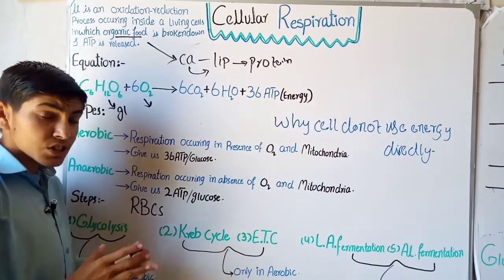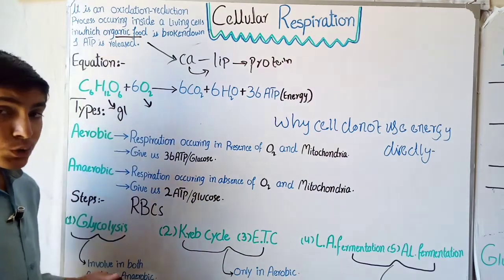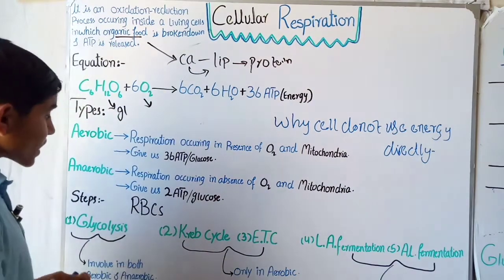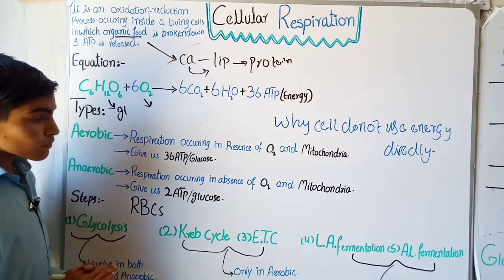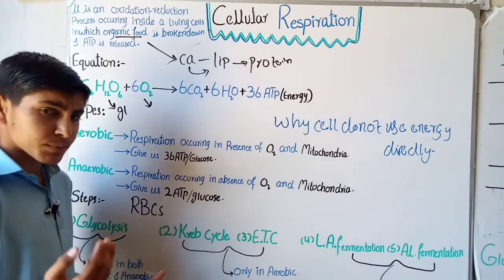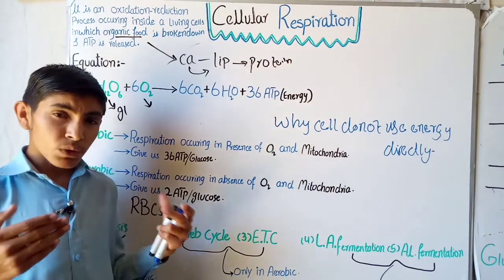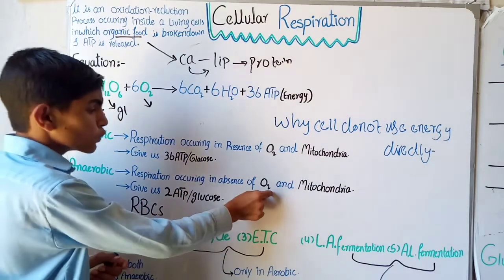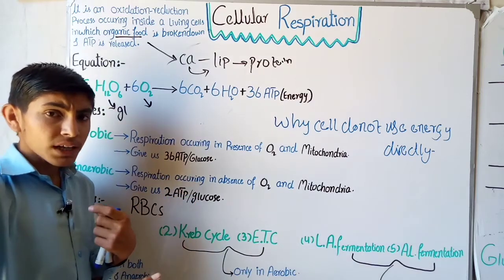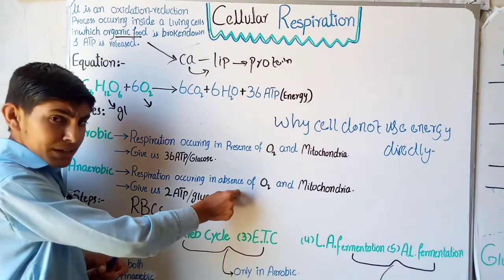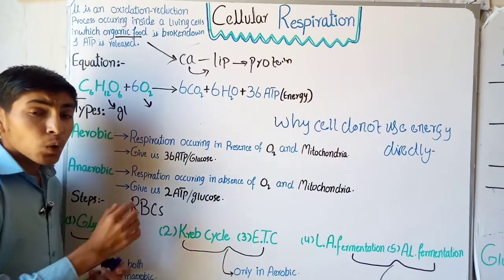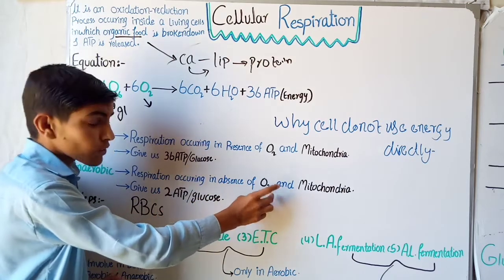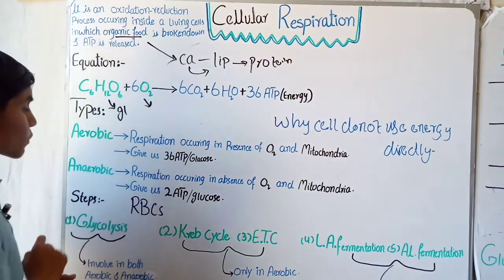Because red blood cells do not use O2 by themselves, they are able to transport O2 to every cell of the body. Anaerobic respiration also occurs in our muscles sometimes — for example, when we are running, walking, or doing hard activity, and O2 from the lungs is not transferred to the muscles fast enough. At that time, our muscle cells undergo anaerobic respiration because they need ATP energy but there is no O2 available.